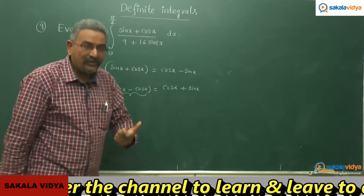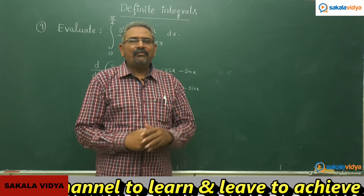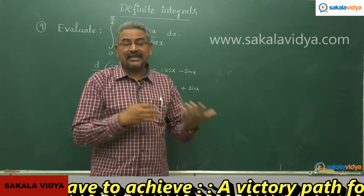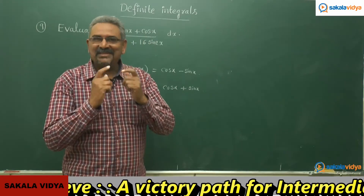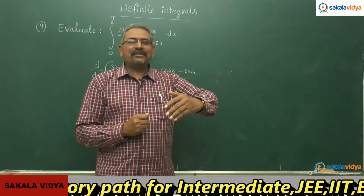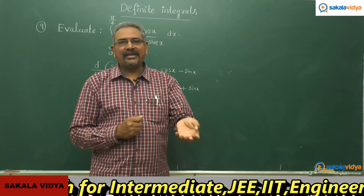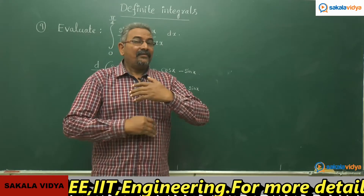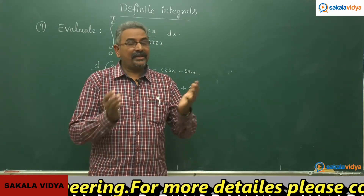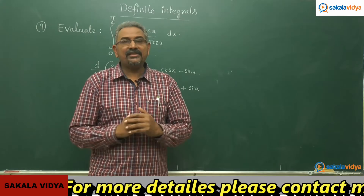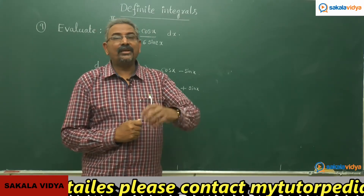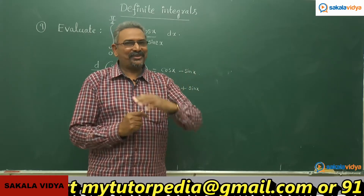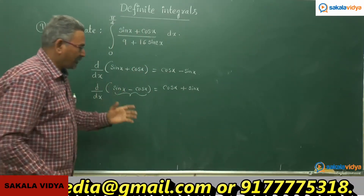We get one more question here: how could we change sin 2x in terms of t? Because our substitution is sin x minus cos x = t. It is very simple — if you square both sides of sin x minus cos x = t, we can express sin 2x in terms of t. With reference to the substitution, we also have to change the lower limit and upper limit. So now let us solve this problem.